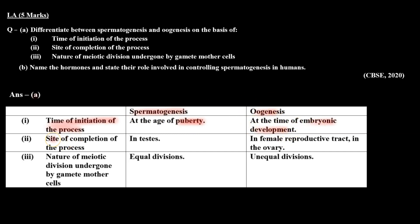Second point mein hume site of completion batani thi dono processes ki. Jo spermatogenesis hota hai yeh testis mein complete hota hai. Aur oogenesis complete hota hai female reproductive tract mein, in the ovary.